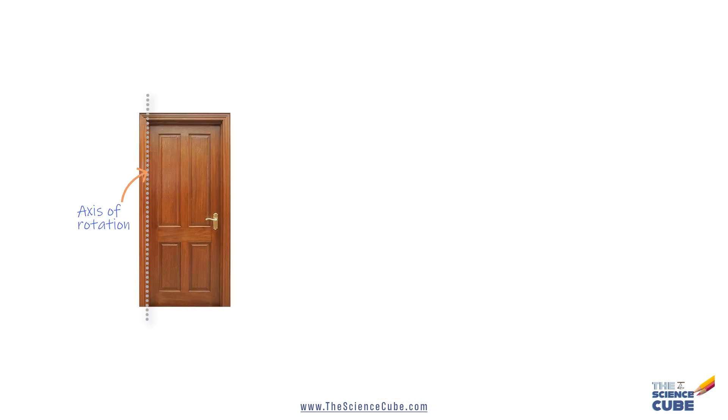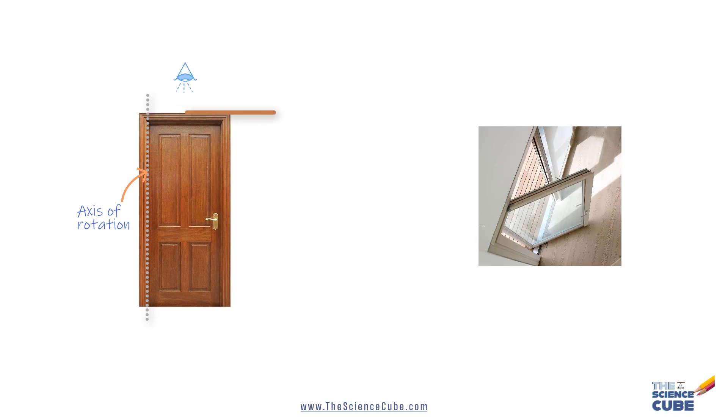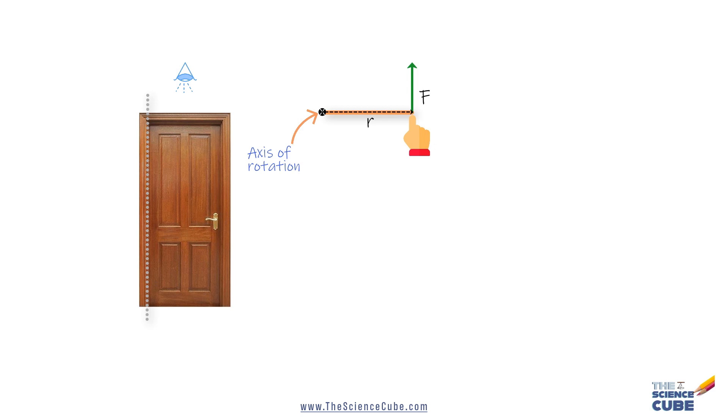Let us dive deeper. Say this is your door, or rather the top view of the door, and this is the axis of rotation around which the door is rotating. This is the applied force, and this arrow is the position vector R of the point at which you are applying the force.